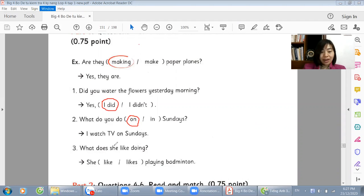Number 2. What did you do on or in Sundays? Since Sunday is a day of the week, we use the preposition 'on'. On Sundays. I watch TV on Sundays. If you pay attention, you can see the answer right in the options. This question is a gift. Number 3. What does she like doing? This is present simple tense, right? So with the subject 'she', we use the verb 'likes'. Name is finish. That's good.